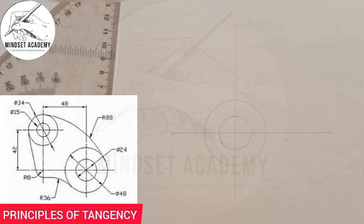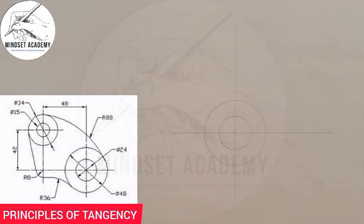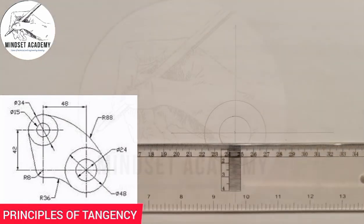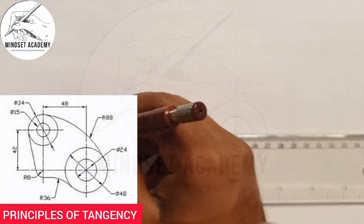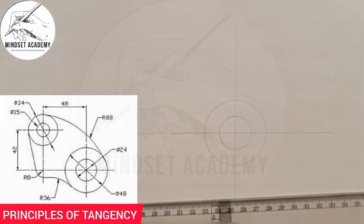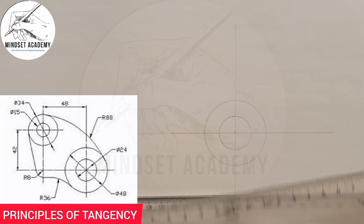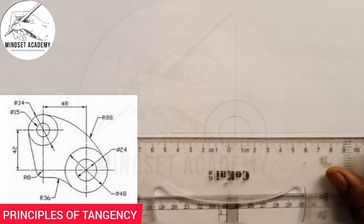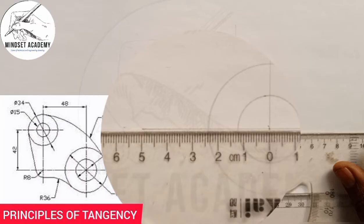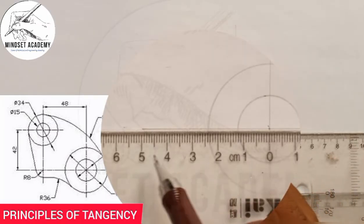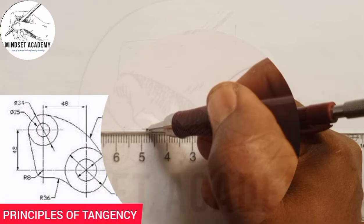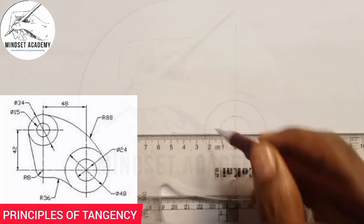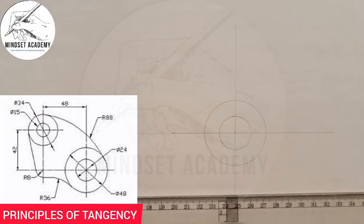From this center to the next center, as my arrow is pointing, the distance is given as 48. I will extend this line and measure 48 from that point — from 0 straight down to 48 on my meter rule.